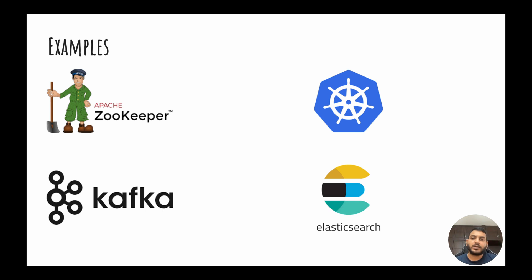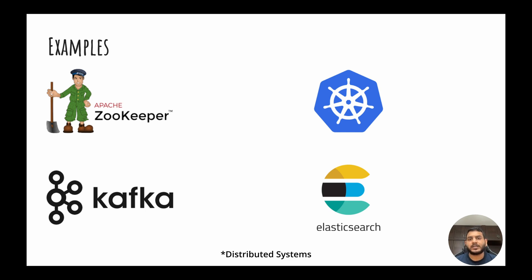What are a few applications where leader election is used internally? Zookeeper is one distributed key-value store that internally uses the leader election process to identify the node which handles all the writes. Kubernetes internally has many use cases for leader election — one is the kube-scheduler, whose role is to schedule pods onto different nodes via a leader elected through leader election. Similarly, Kafka and Elasticsearch are other database systems which internally use the leader election process to manage write operations.